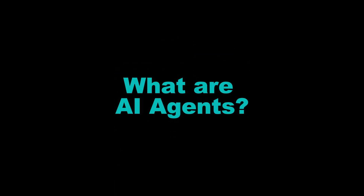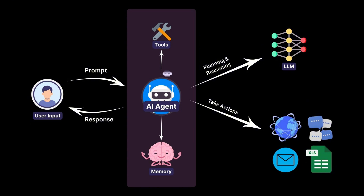So let's start with the basics. What exactly are AI agents? In simple terms, an AI agent is a software program that can perceive its environment, make decisions, and perform actions to achieve specific goals, all autonomously. Think of them as digital assistants that can learn, adapt, and execute tasks on your behalf.